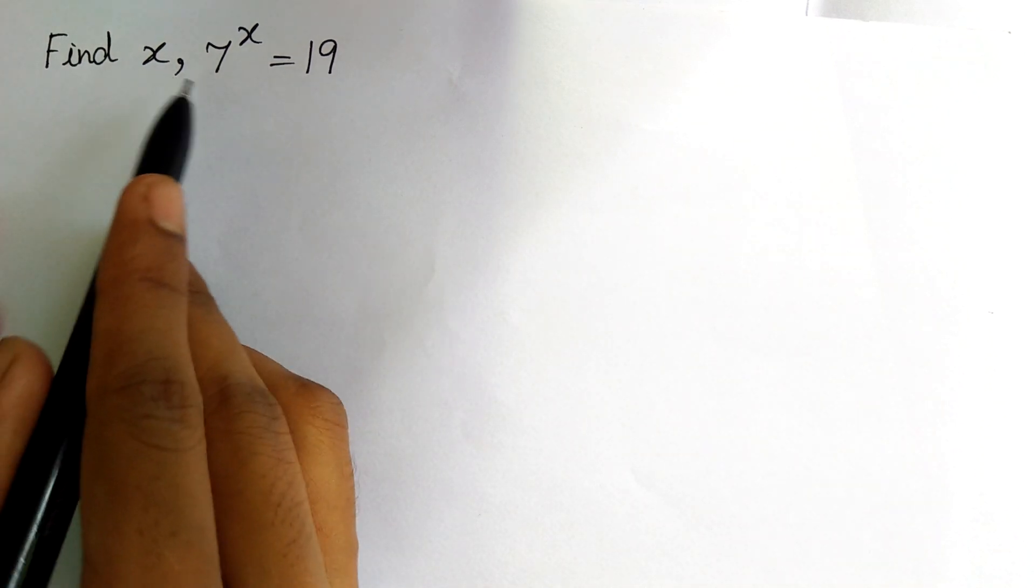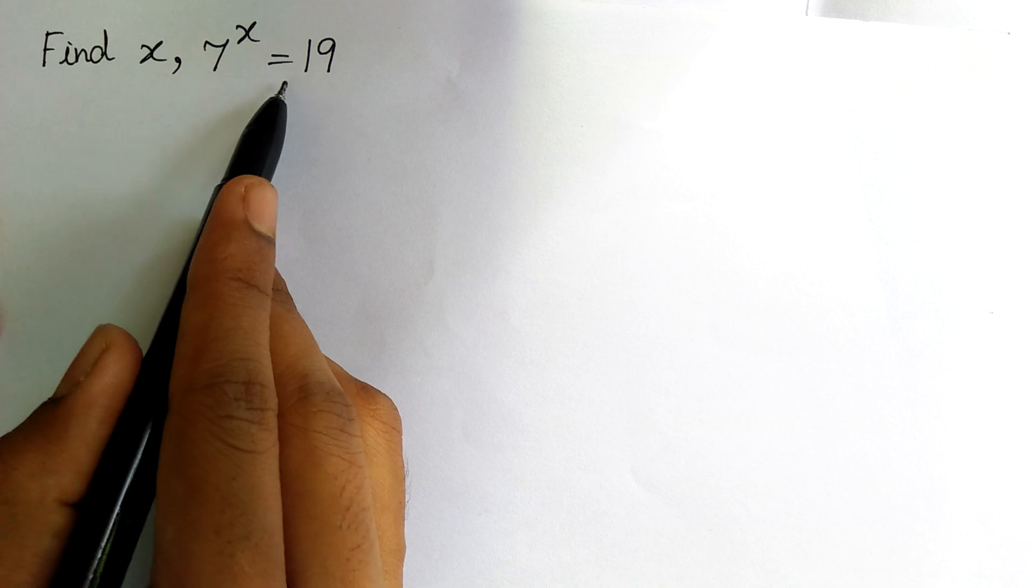The question is find x. 7 power x is equal to 19.